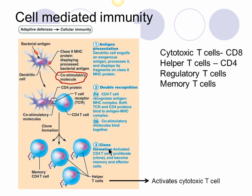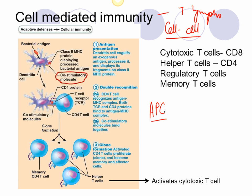Now let's look at cell-mediated immunity. The most important thing to remember is that it's a cell-to-cell reaction. In cell-mediated immunity, a T-lymphocyte latches on to an infected cell and destroys it. An antigen must be presented to the T-lymphocyte — cell-mediated immunity is carried out by T-lymphocytes. The antigen is usually presented by cells known as antigen-presenting cells, though normal body cells can also present it.